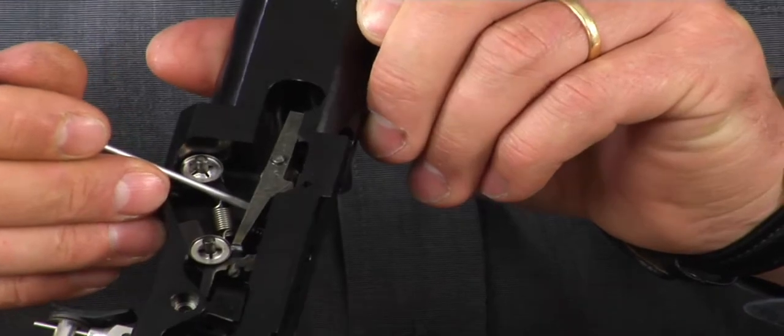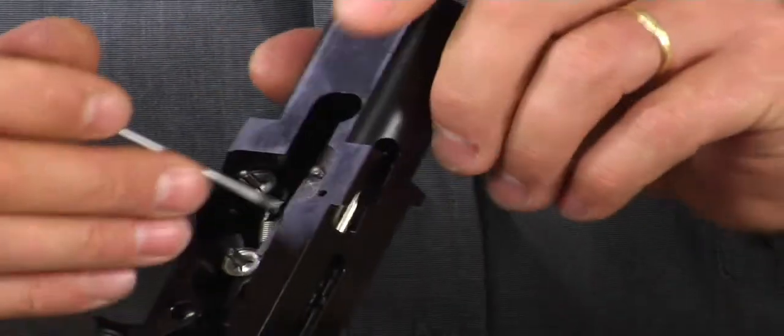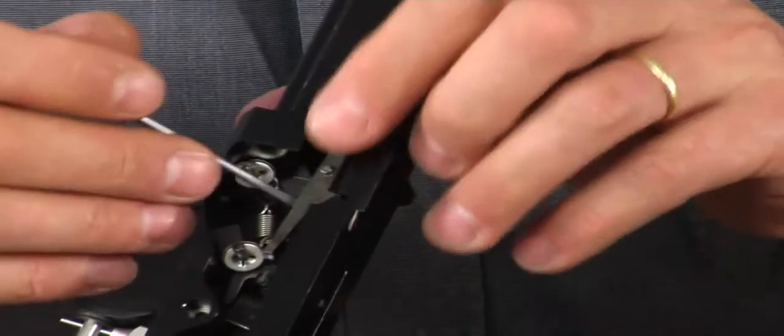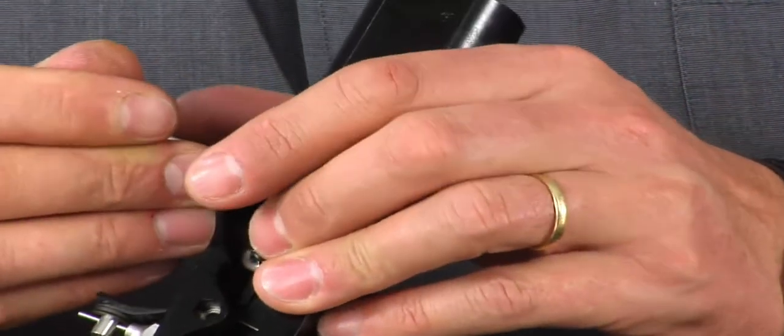Then you place a small slotted screwdriver underneath the sear catch link. When removing the sear catch link take care that the spring does not jump off or is lost.